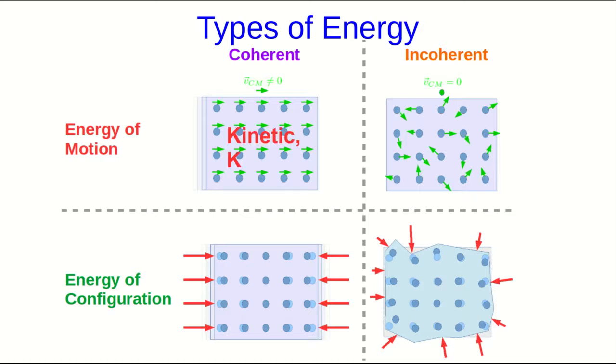Coherent motion is what we refer to as kinetic energy. Configurations that change in organized ways lead to changes in potential energy. Incoherent motion is captured by thermal energy.